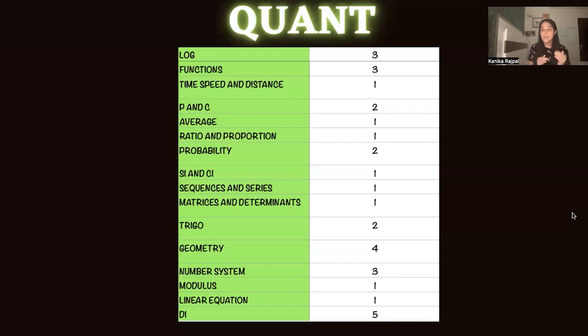If you just crack the code for one question in the DI set, you can pretty much solve the entire DI set and grab those 20 marks. Roughly the cutoff in quant is around 40-ish, so you're already getting half of the cutoff with just one DI set. Therefore, focusing on puzzle based questions and logical questions becomes very, very important.